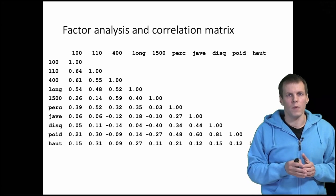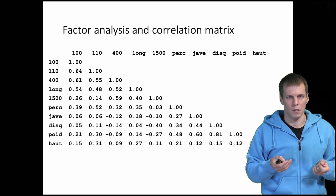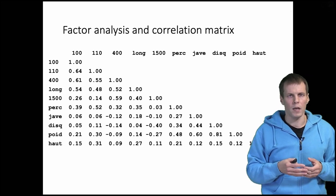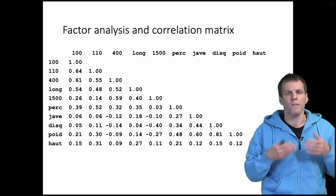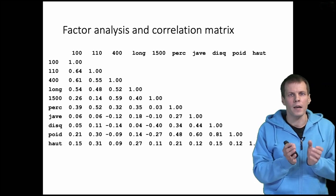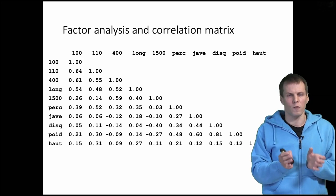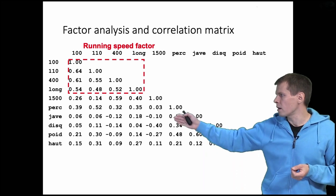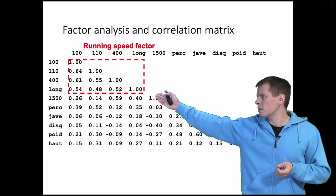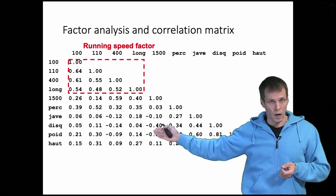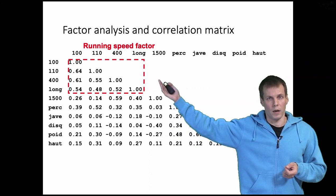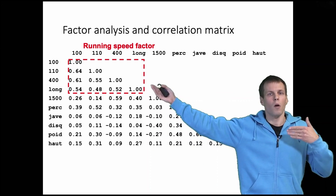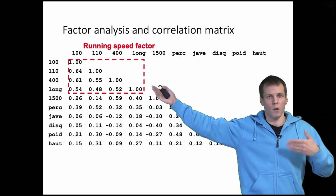We can take a look at the correlation matrix to see what the factor analysis does. These are the correlations between the sports and factor analysis basically finds those combinations of sports that are highly correlated with one another. We have here the running sports, they are highly correlated and they're less correlated with other sports than they are with one another. So we could say that these all sports measure your running speed.